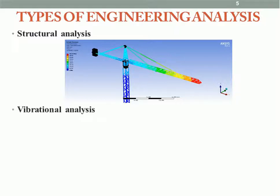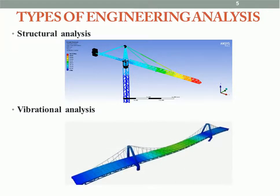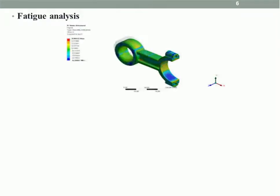The second type is Vibration Analysis, which covers random vibrations, shock, and impact load. It is used for the vibration analysis of bridges and other frameworks. The next analysis is Fatigue Analysis, which deals with cyclic loading and its effects. It is used to predict the service life of locomotive parts, including crack propagation and damage tolerance.